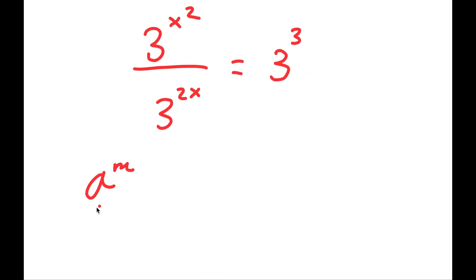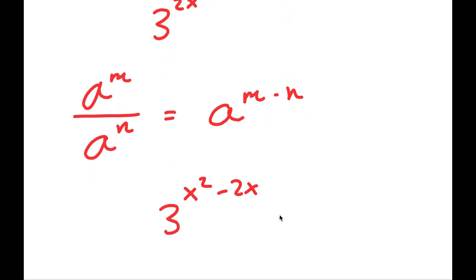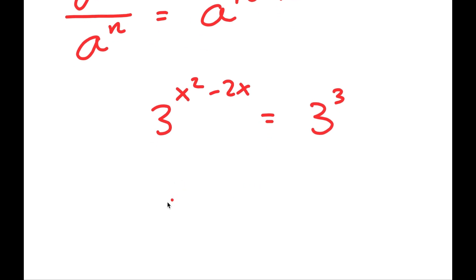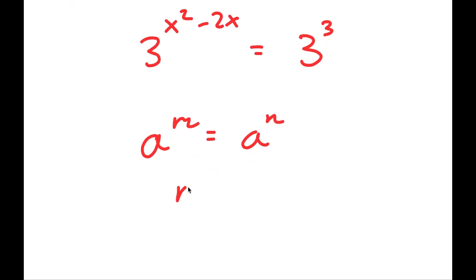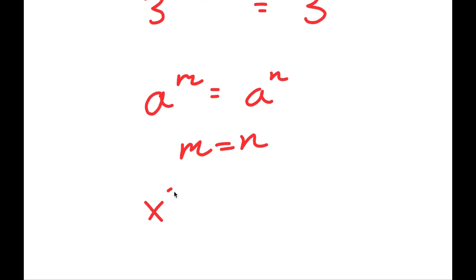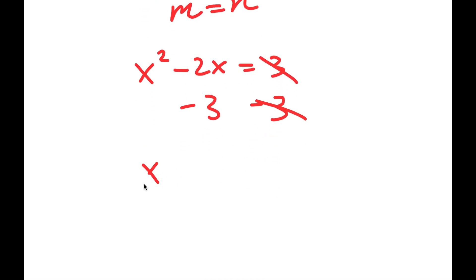Using the quotient of powers rule — a to the power of m over a to the power of n equals a to the power of m minus n — I get 3 to the power of (x squared minus 2x) equals 3 to the power of 3. Since the bases are equal, I can equate the exponents: x squared minus 2x equals 3. Subtracting 3 from both sides gives x squared minus 2x minus 3 equals 0.